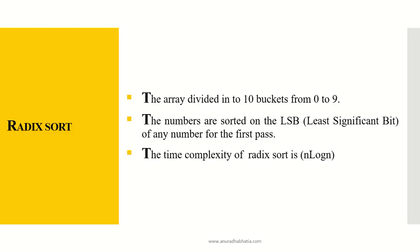This is a radix sort algorithm where the numbers are sorted on the least significant bit of any number for the first pass. Whereas the bucket sort algorithm sometimes considers the most significant bit, and the procedure is different as we merge the data when working on bucket sort. So in this particular video, we are just considering the radix sort algorithm. The time complexity for the radix sort is n log n.